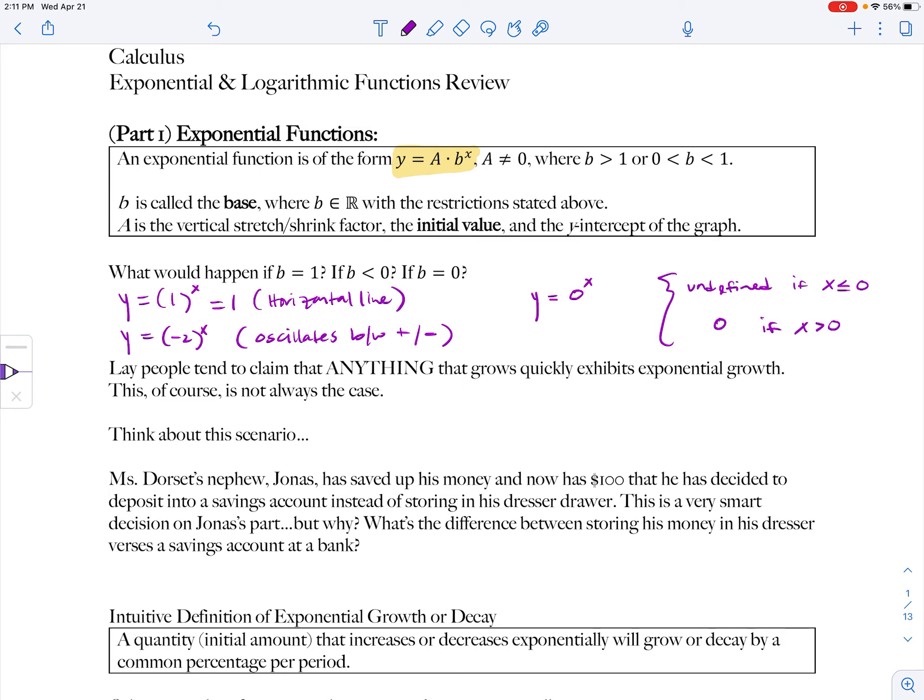So let's think about this scenario as an example for exponential growth. Ms. Dorset's nephew, Jonas, has saved up his money and now has $100 that he has decided to deposit into his savings account instead of storing it in his dresser drawer. This is a very smart decision on Jonas' part, but why? What's the difference between storing his money in his dresser versus a savings account at a bank? Well, if we put that $100 in his dresser and he leaves it, doesn't do anything, and he goes back a year later and opens up the drawer, there's only going to be $100 there still, which is good. It's nice to find money. After two years, there would still be $100 there. After three years, still $100, unless he's adding money to it, which is not what's described in this situation.